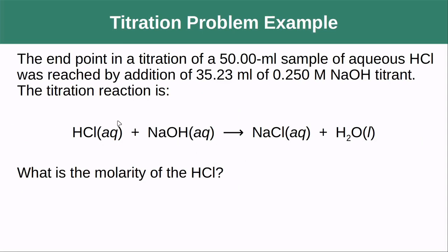Let's look at an example problem — an acid-base titration. The endpoint in a titration of a 50 mL sample of aqueous HCl — HCl is our analyte here because it's our sample — was reached by the addition of 35.23 mL of 0.250 M sodium hydroxide. So right off the bat, I know that sodium hydroxide is going to be my titrant, and I know how much of that titrant I added, because I know its concentration is a known quantity.